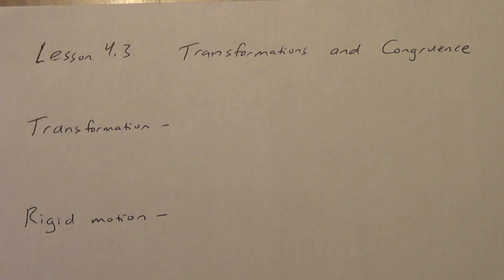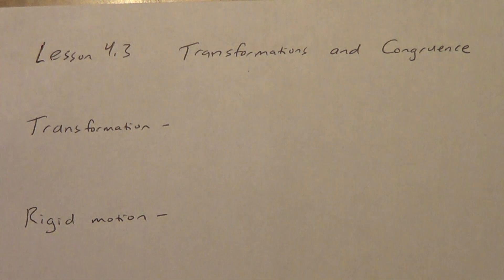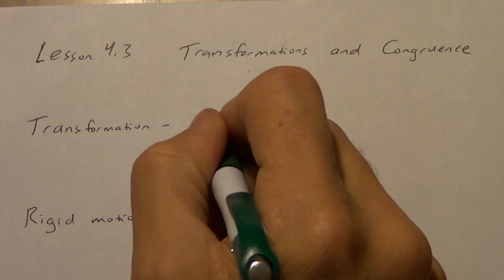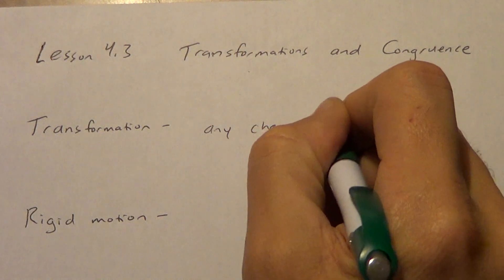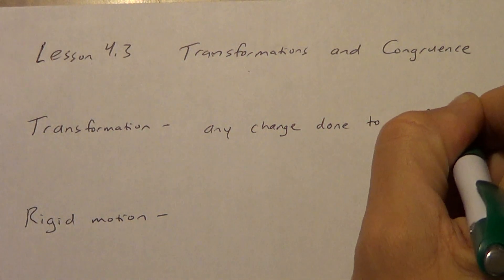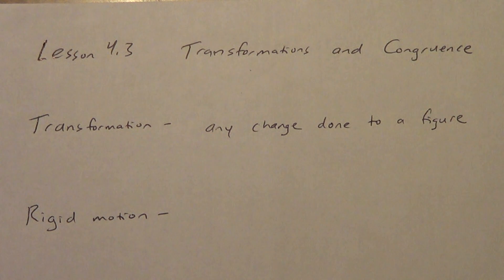We're going to begin lesson four now. We're talking about what's called transformations and congruence. Let's start with the term transformation. A transformation is any change done to a figure. That figure might be a triangle, it might be a square, it might be something else, and we can change it in all different kinds of ways.